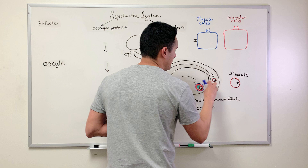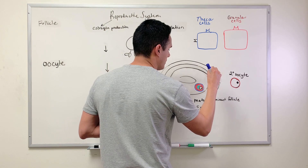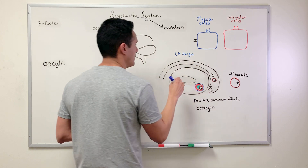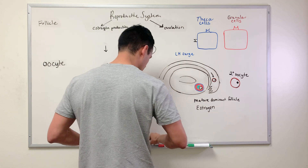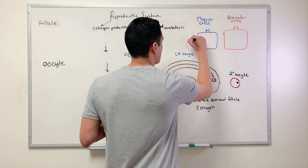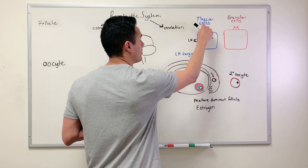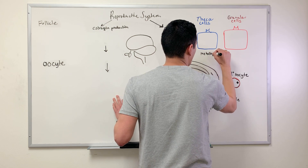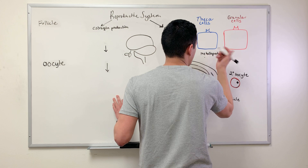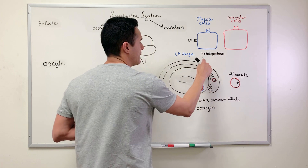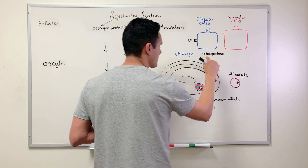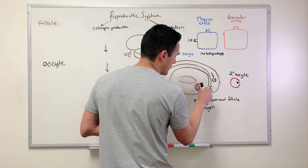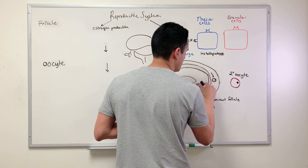In order to get the egg into the fallopian tube, we have what's called the LH surge. Luteinizing hormone is going to bind to the theca cells and activate metalloprotease enzymes. These metalloprotease enzymes help to break apart the mature follicle so that we can get the secondary oocyte into the fallopian tube.